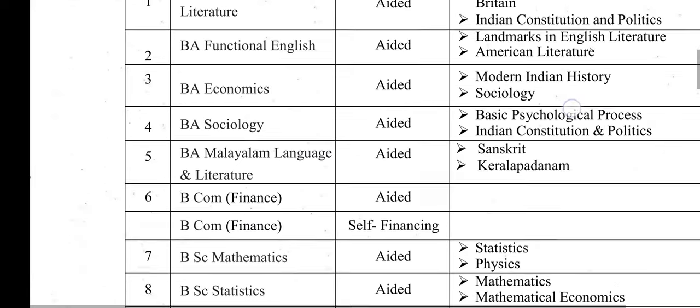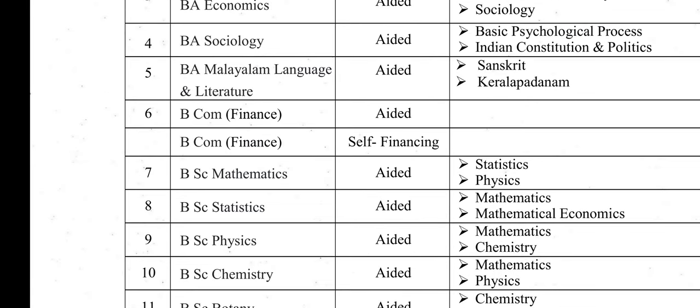For four-year courses, there are two options: the Aided course and the Self-financing course. The exam fee structure differs between them — the Aided course has a fee, while the self-financing course fee structure is separate.